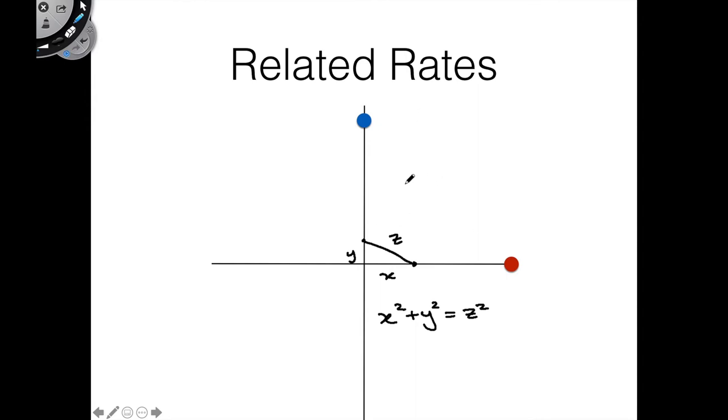Or how is this z changing with respect to time? So let's make that our goal to answer in this video. Our goal is we want to find how z is changing. So as time goes on, how is that distance z changing? As these two dots are moving, how is that distance z changing?